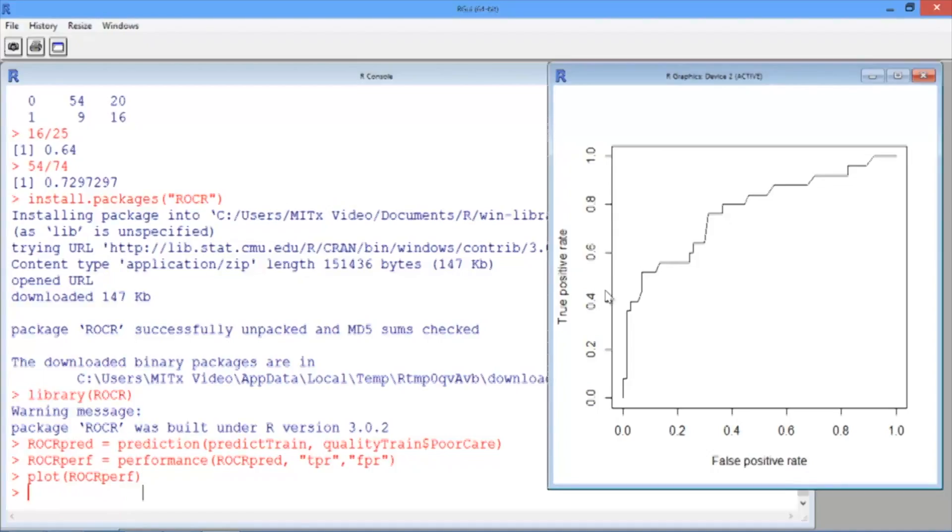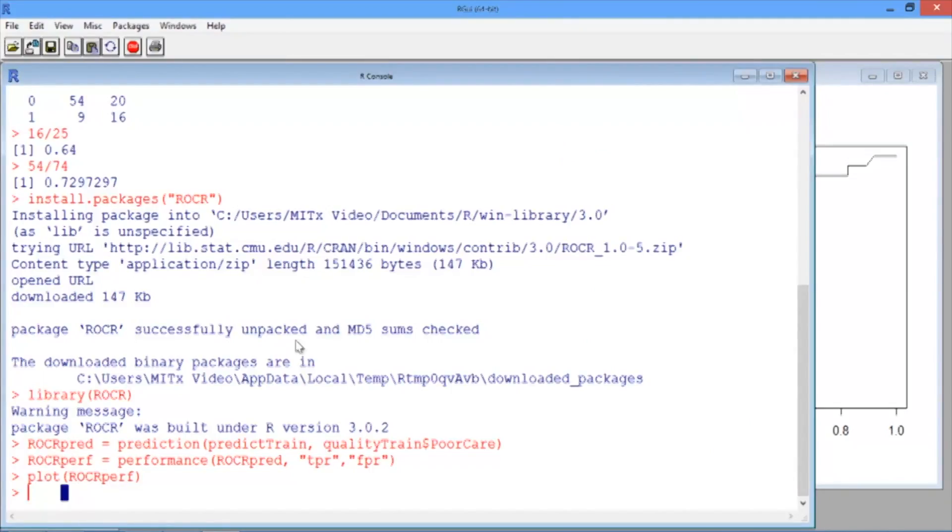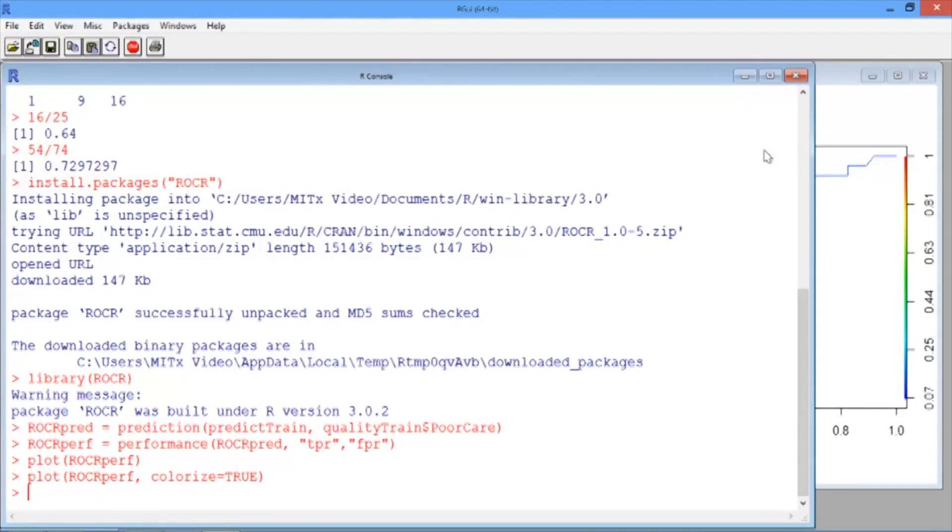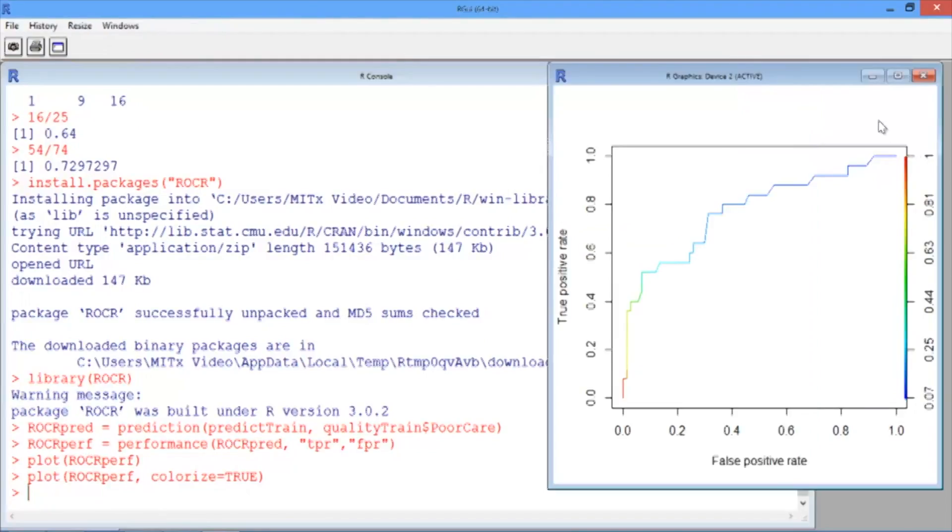Now you can add colors by adding one additional argument to the plot function. So in your R console, hit the up arrow, and after ROCRperf, type colorize equals TRUE and hit Enter. If you go back to your plot window, you should see the ROC curve with the colors for the threshold values added.